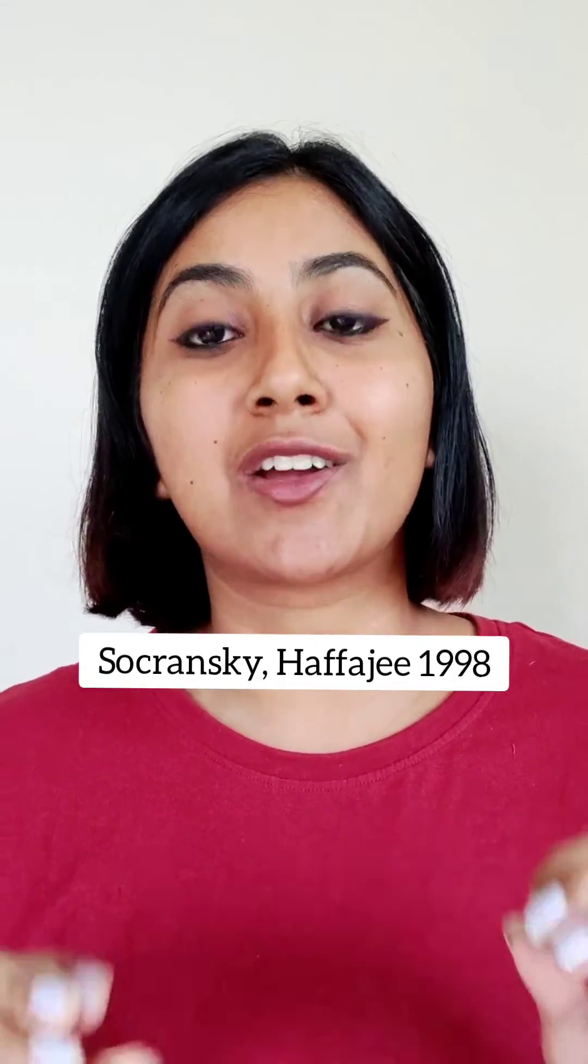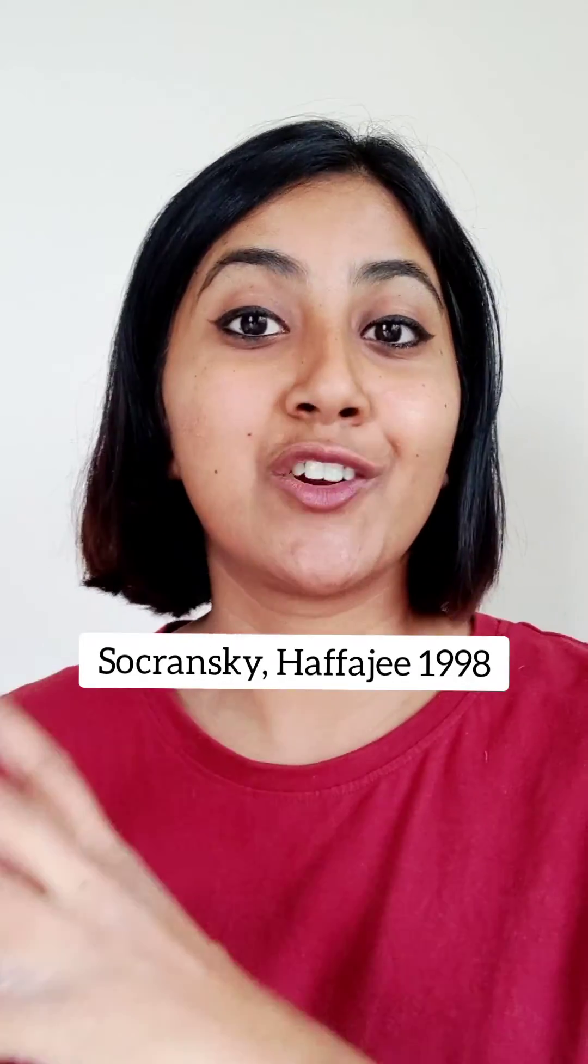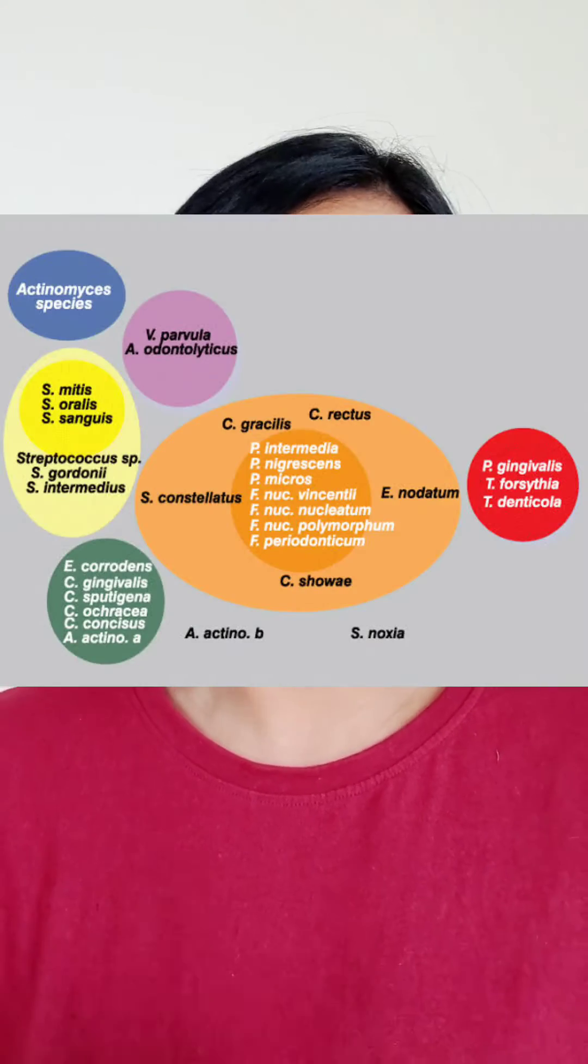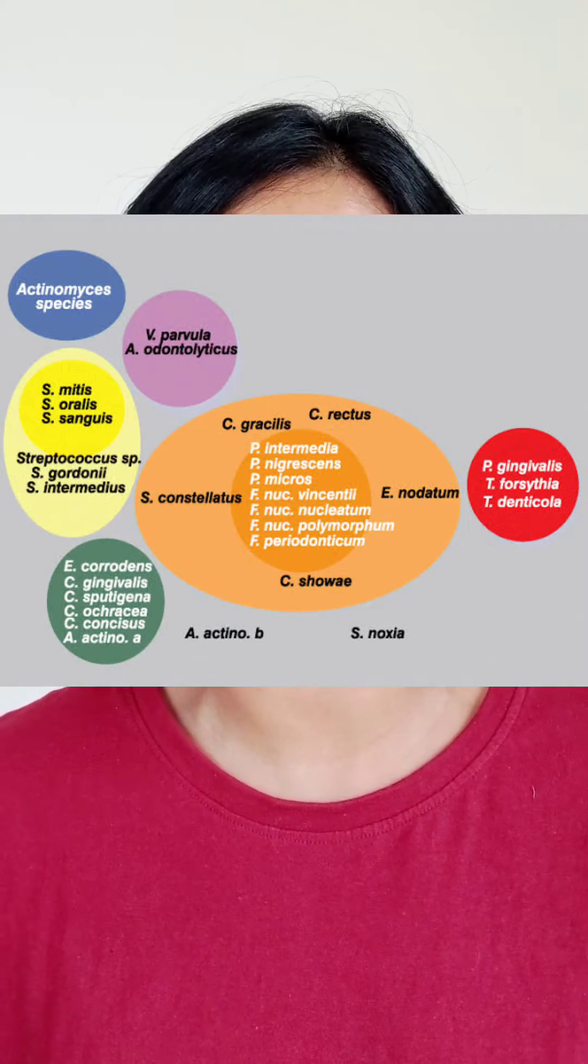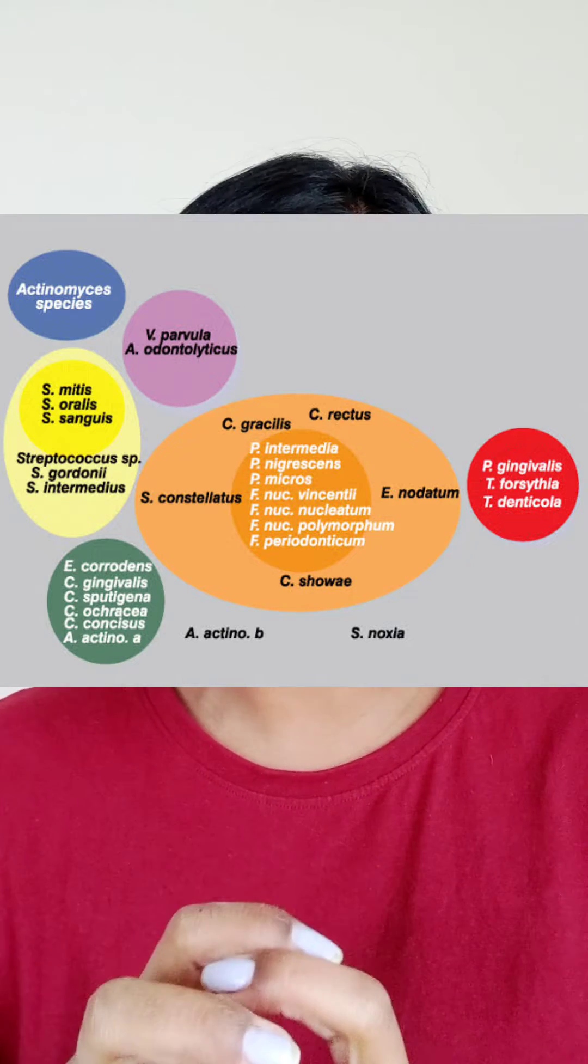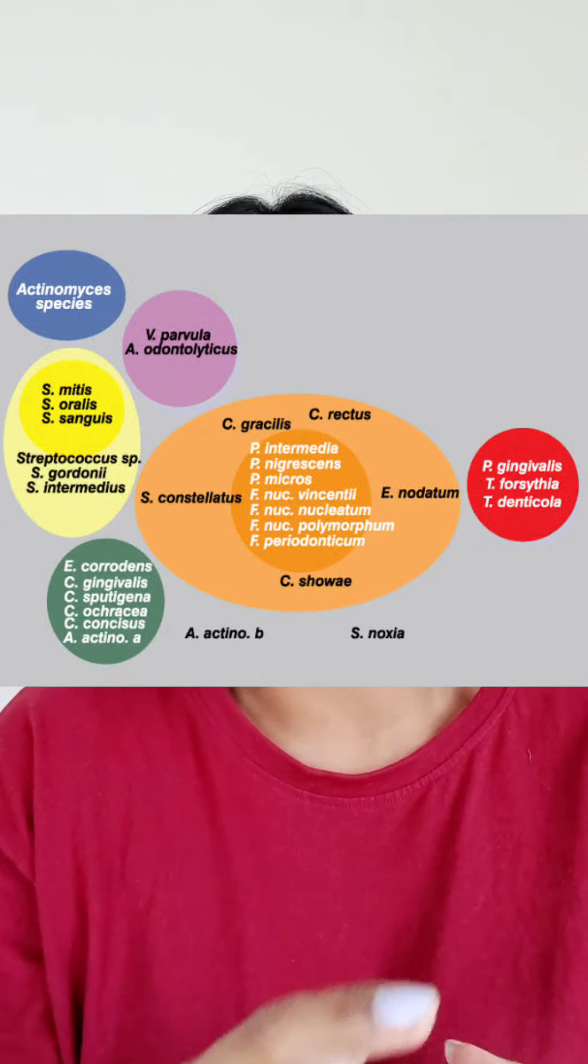The bacteria in dental plaque are grouped into seven groups or complexes called the purple, blue, green, yellow, orange, red, and grey complexes. The bacteria in each of these complexes have very similar characteristics.